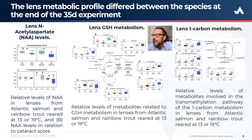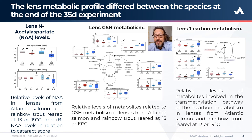Looking at the right of the slide, you will see the lens one-carbon metabolism. Several intermediates in the transmethylation pathway of the one-carbon metabolism were present at different levels in Rainbow Trout and Atlantic Salmon. Atlantic Salmon reared at 19 degrees had significantly higher levels of S-adenosylmethionine (SAM) and S-adenosylhomocysteine compared to salmon reared at 13 degrees.